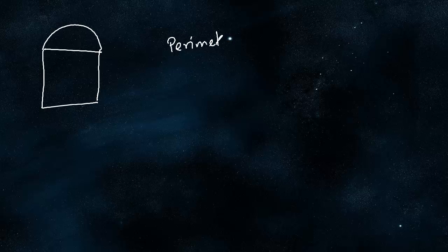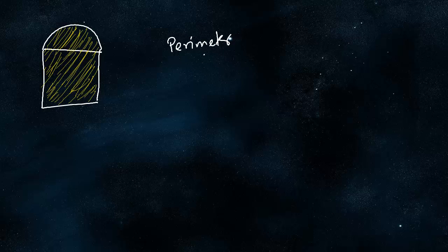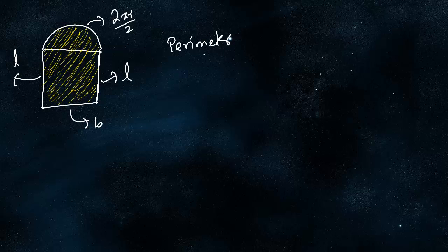Another important concept is the perimeter. When we have a shape made up of a semicircle and a rectangle, the perimeter means the total length of the boundary. For a shaded region like this, the perimeter would include the arc (half of a circumference), the length L, the opposite side L, and side B — but not any side that is inside the shape, since perimeter refers only to the outside border.